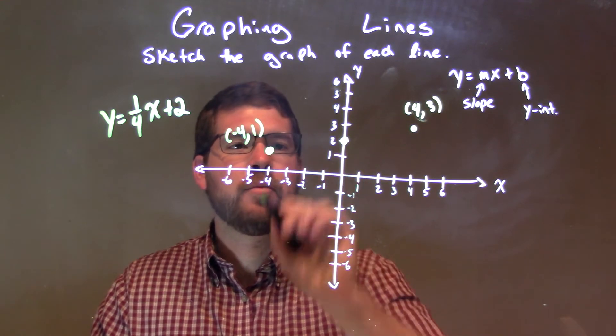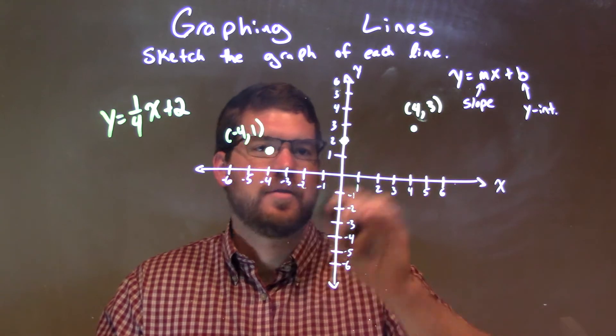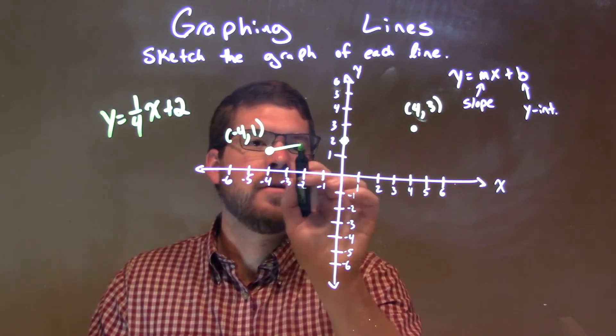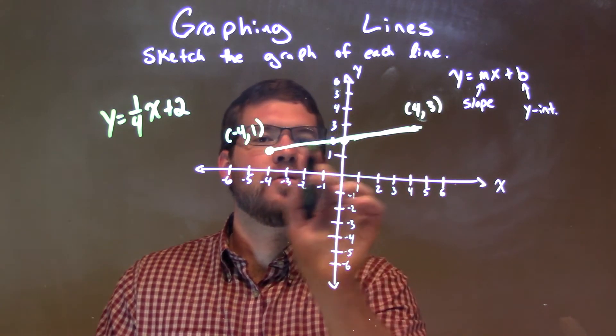So if we want, we have a few points right there. Remember, up 1 unit over 4 is the same thing as down 1 unit to the left 4. So we connect these points here.